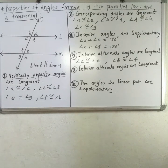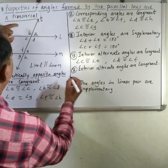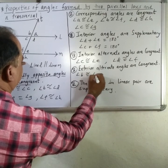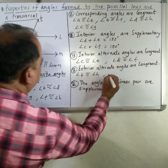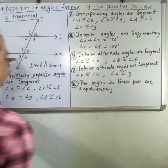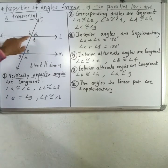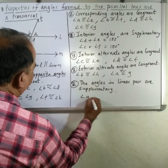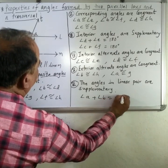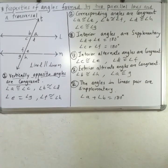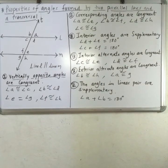The fifth property is that exterior alternate angles are also congruent: angle B is congruent to angle H, and angle A is congruent to angle G. Additionally, angles in a linear pair are supplementary, so angle A plus angle B equals 180 degrees. These are the properties of angles formed by two parallel lines and a transversal.